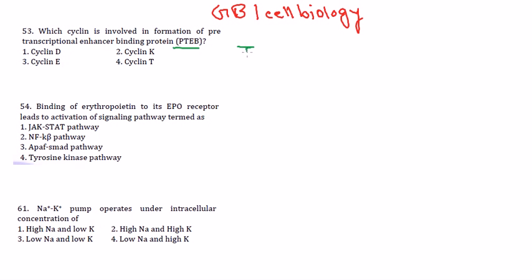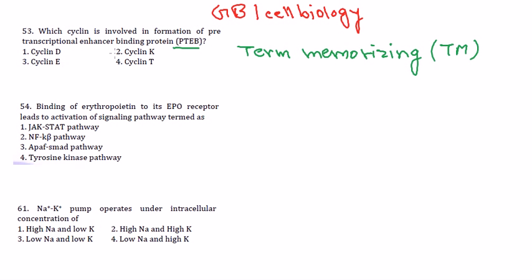This question is a term-memorizing type, or TM type. Term memorizing means you need to memorize specific terms — in this case a protein name. You need to directly know the answer; you don't need to apply any concept, you simply memorize it. The answer here is that PTAB is associated with Cyclin K, so option 2 is the correct choice.